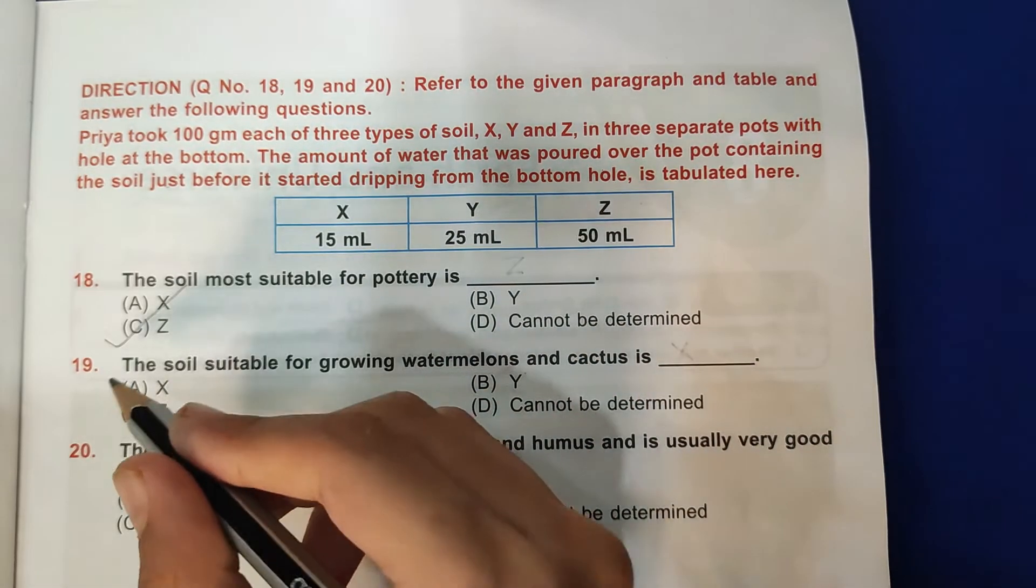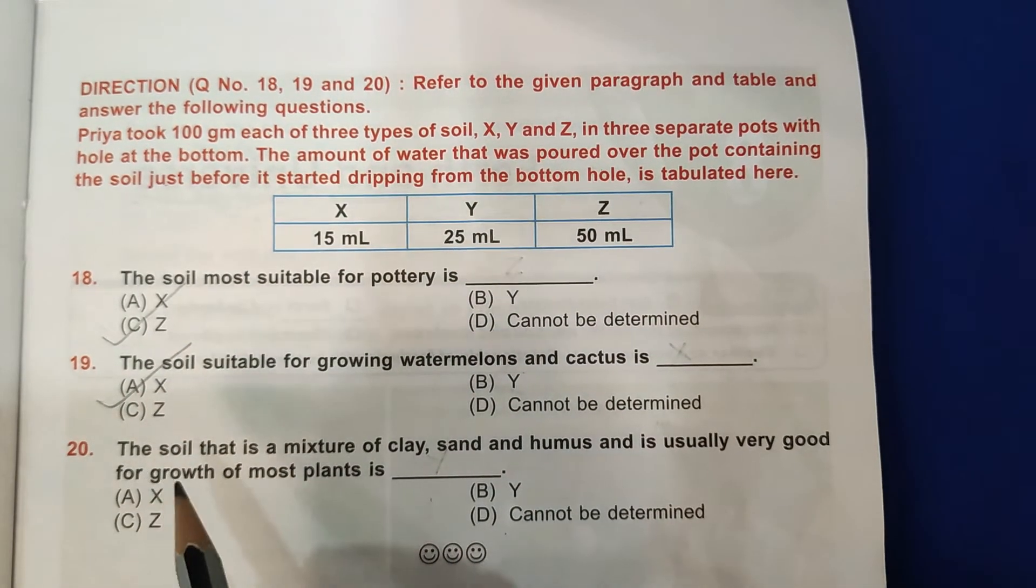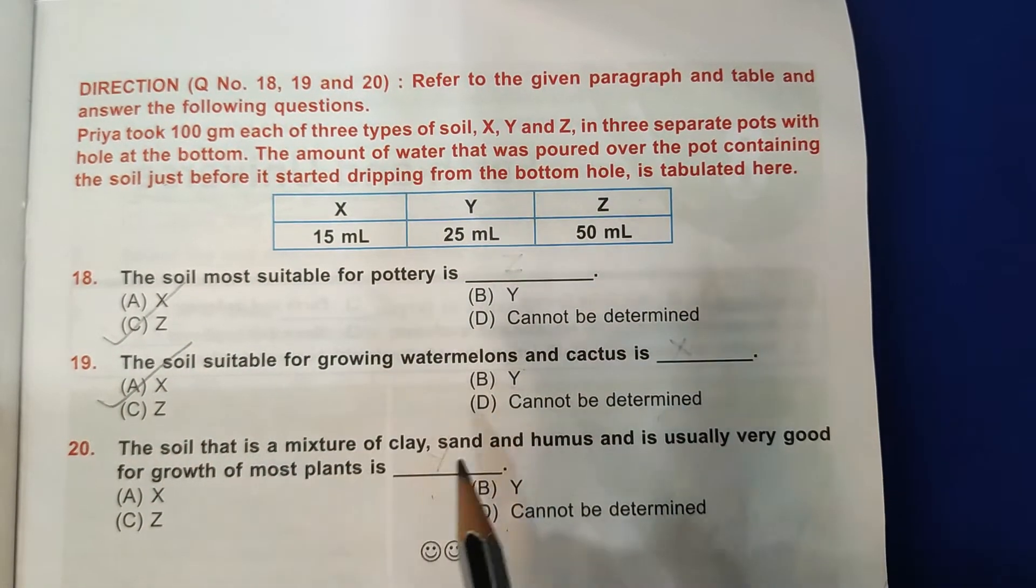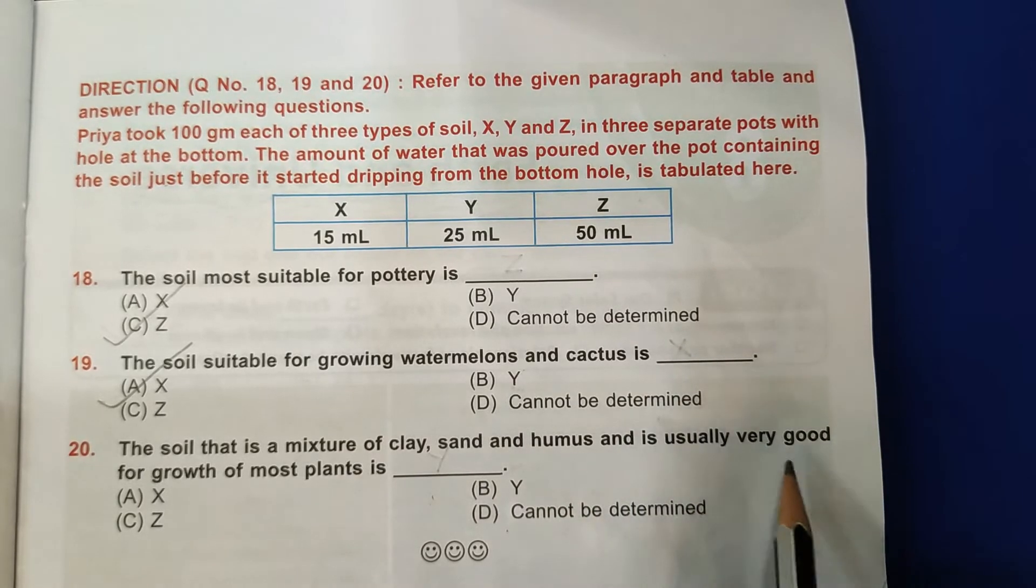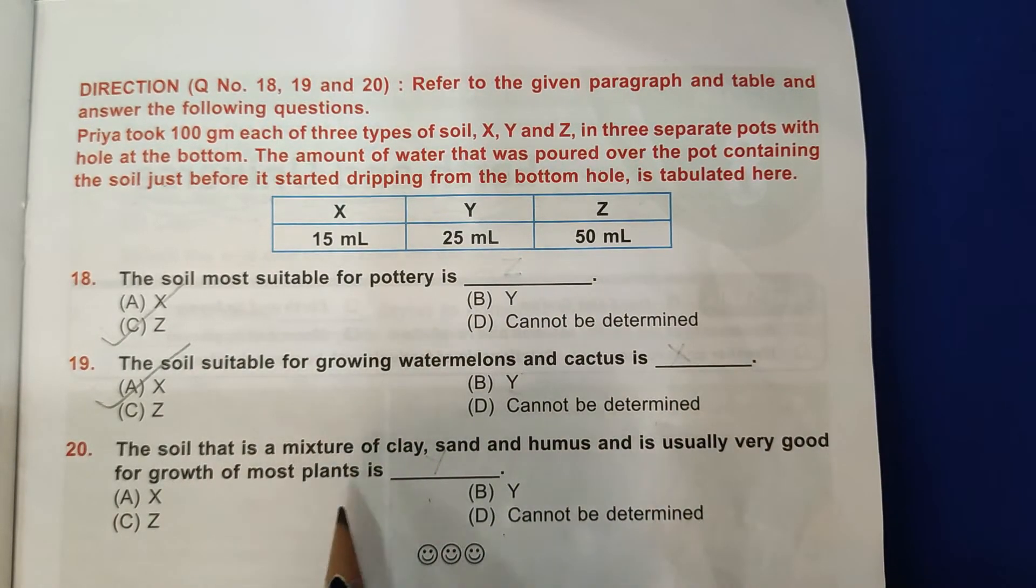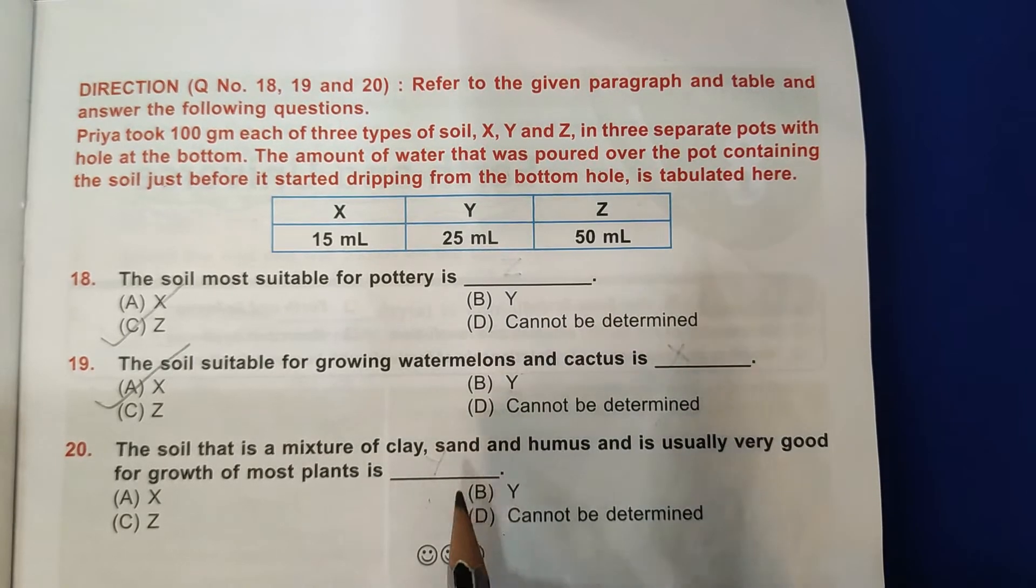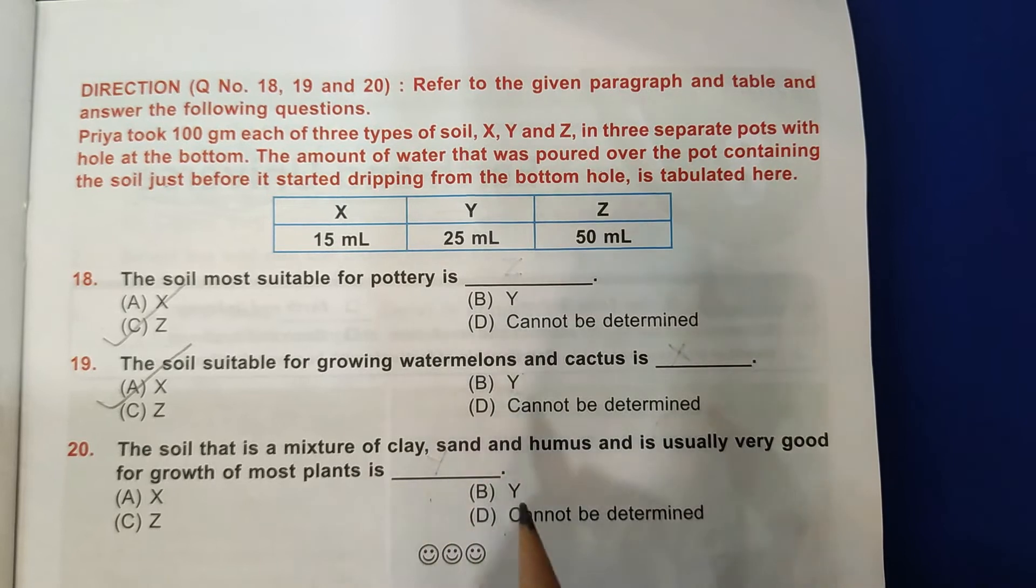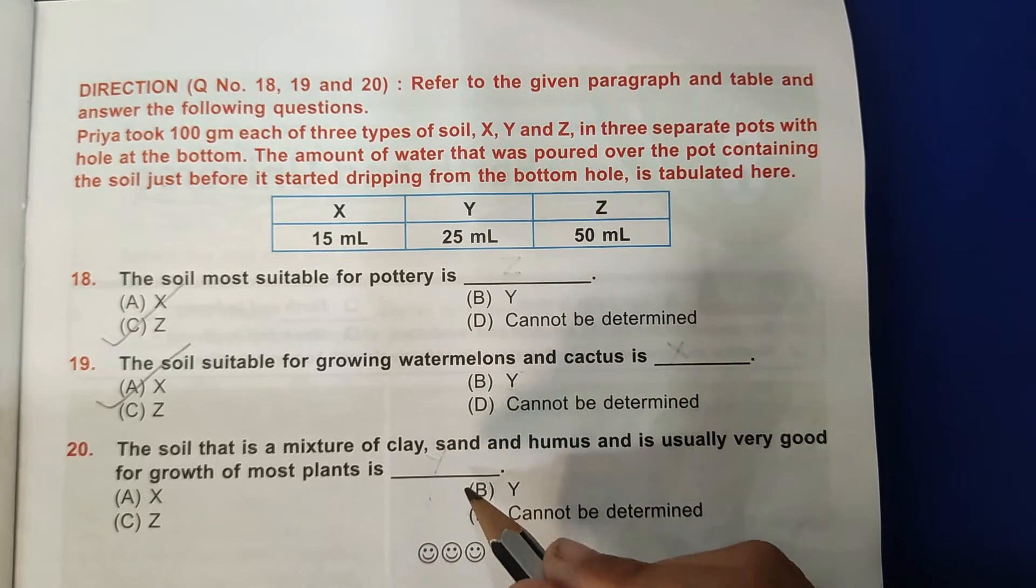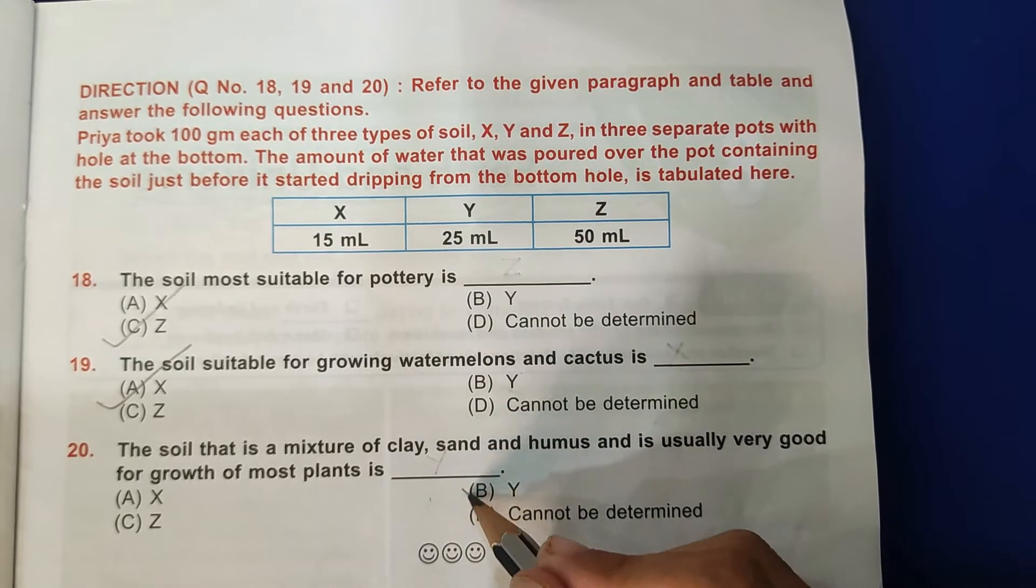20th question: The soil that is a mixture of clay, sand, and humus and is usually very good for growth of most plants is Y, because it is holding a good amount of water for all the plants, means B is the correct answer. So if you like this video, like, share, and subscribe. Thank you.